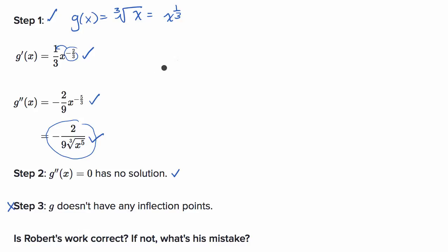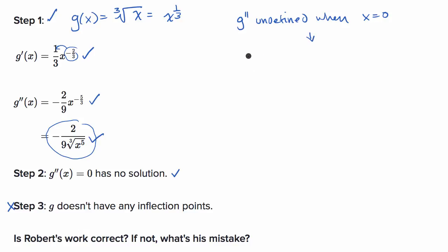He can't make that statement without checking where the second derivative could be undefined. For example, g double prime is undefined when x equals zero — zero to the fifth, cube root of that is zero, but then you're dividing by zero. So g double prime is undefined when x equals zero, making x equals zero a candidate inflection point.